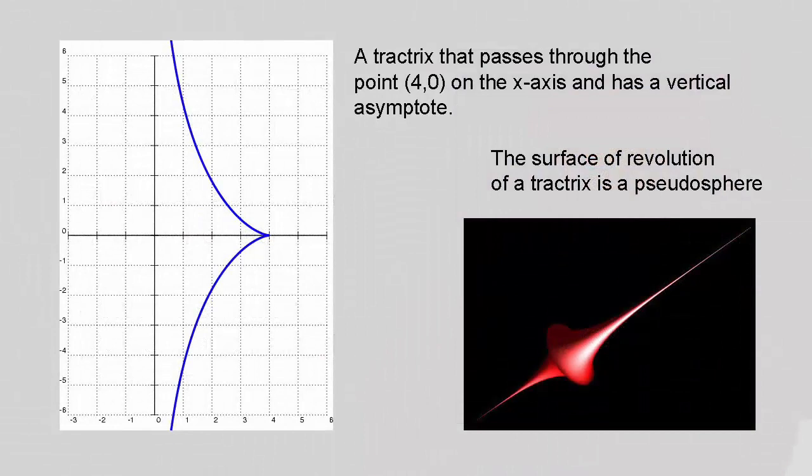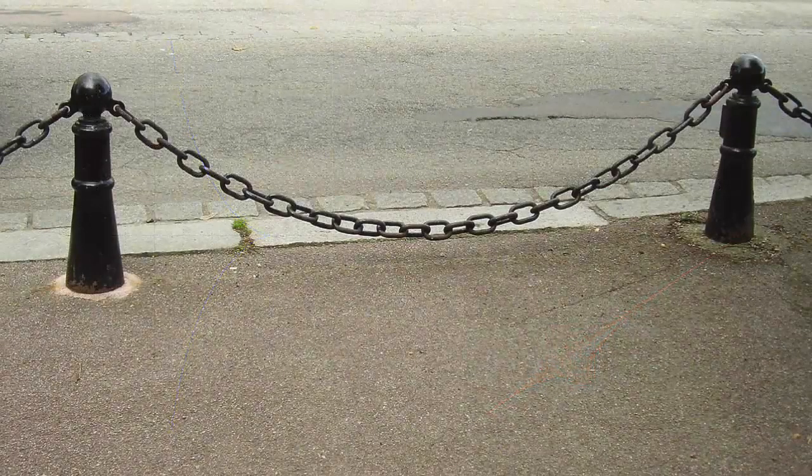Now in an earlier video, I told you about an interesting surface called Gabriel's horn, and I said that this was the surface of revolution of part of the curve y equals 1 over x. Well, it turns out that if you rotate the tractrix about the axis which it approaches more and more closely without ever touching, the surface of revolution that you generate is the pseudosphere, and the pseudosphere was the topic of another video on this channel.